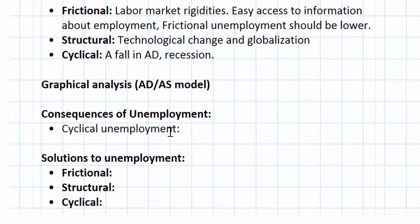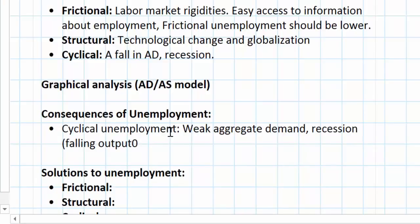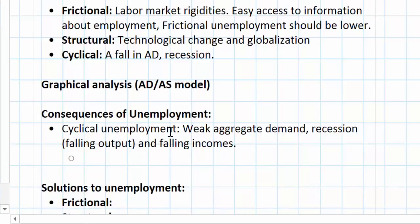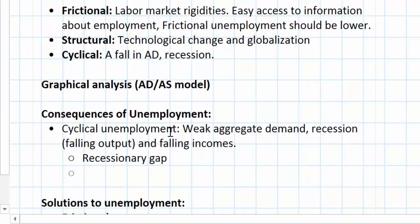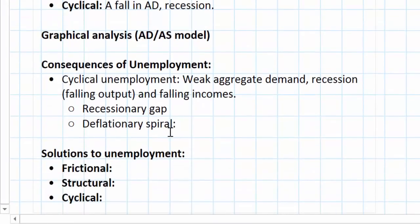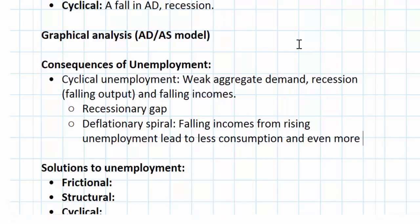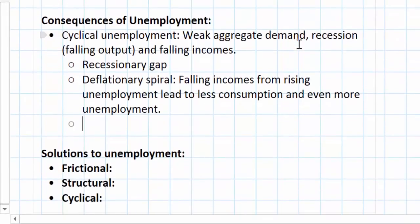When we talk about the consequences of unemployment, we are really looking at cyclical unemployment. If an economy is experiencing cyclical unemployment, this means there is weak aggregate demand, recession, falling output, and falling incomes. The existence of cyclical unemployment can lead to several undesirable consequences, including a recessionary gap and possibly a deflationary spiral. A deflationary spiral refers to a situation in which falling incomes from rising unemployment lead to less consumption and even more unemployment — one of the worst case scenarios an economy can experience.